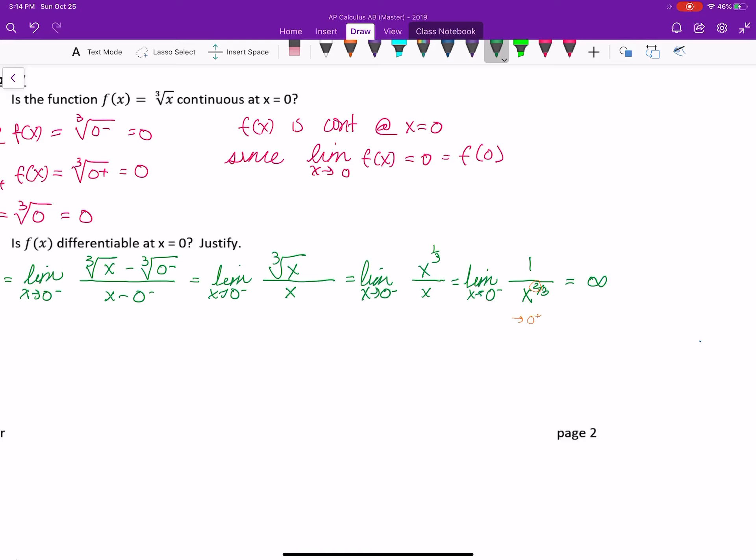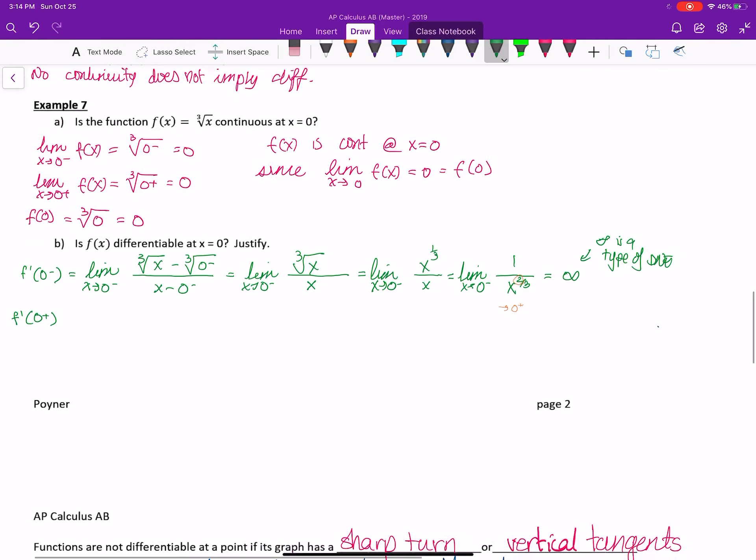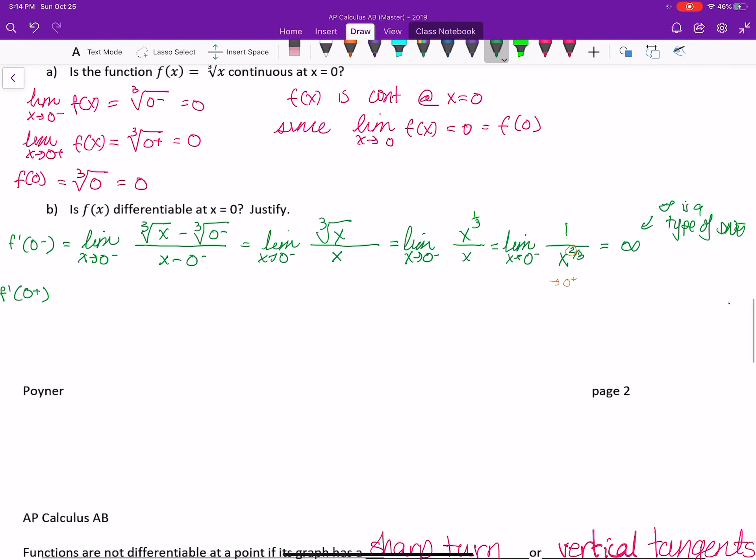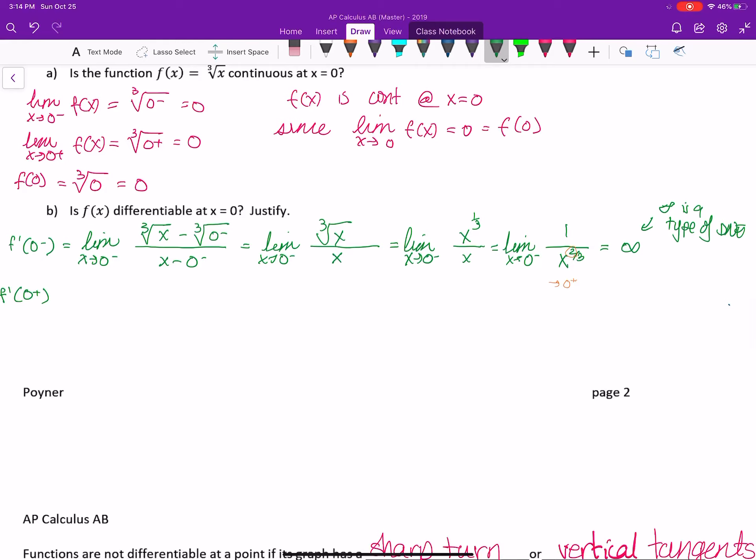Just a side thought here. Infinity is a type of DNE. So already, the limit from the left does not exist. I already know, then, that this is not going to have a derivative at x equals 0. You could prove it in the other direction as well.